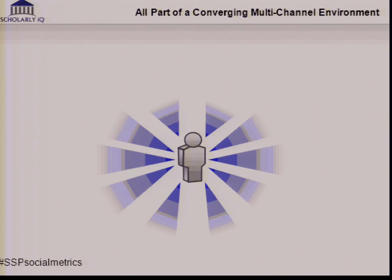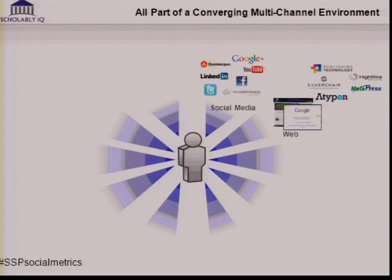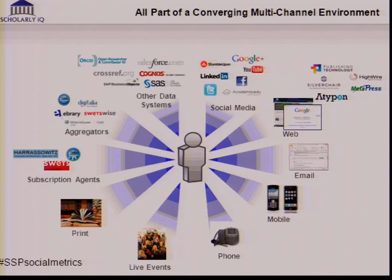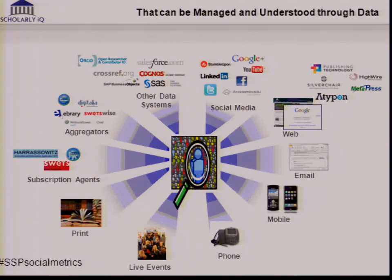Not only is social media fragmented, but we've also got it competing with all the other channels we look at. We still turn up to events, we still have print, mobile, telephones. How does social weigh up against the rest? Putting it in context is largely about getting the data, managing it, understanding it, and linking it together. From that insight, we can start to make metrics and manage a business.